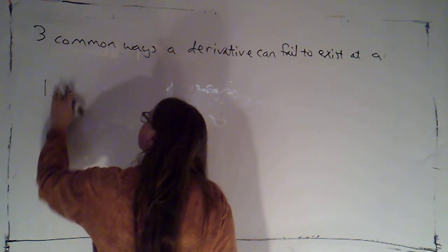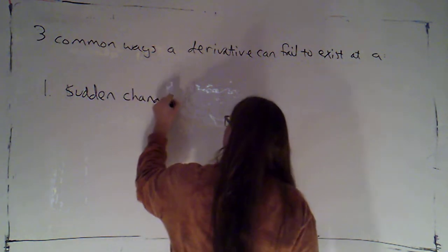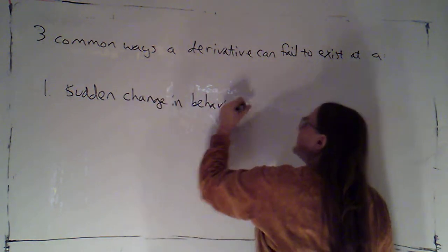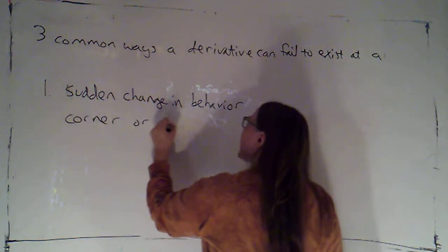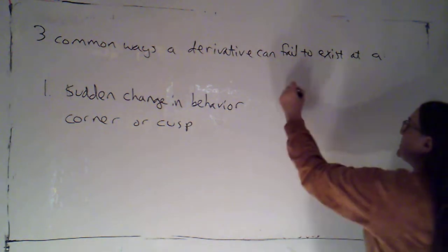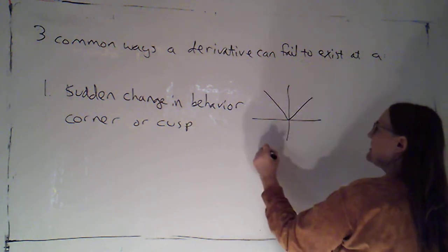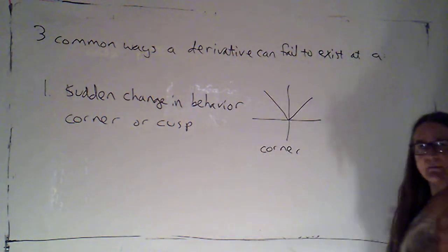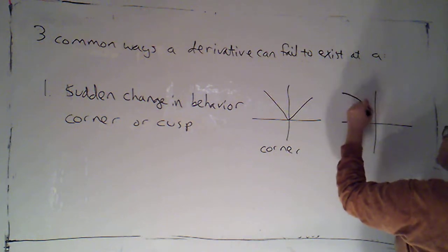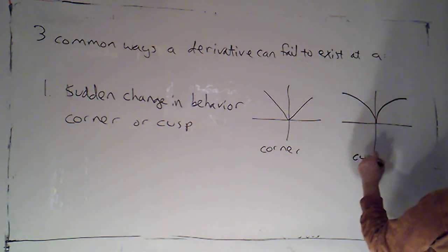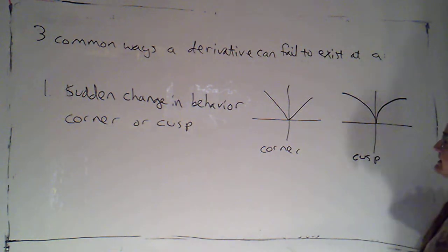One is if there's a sudden change in the behavior of the function. And that's going to generally mean that there's a corner or a cusp in the graph. If I have something like the absolute value function, there's a corner. There's where two line segments meet. If I have two curves that meet at a sharp point, we call that a cusp. With either of these, the derivative doesn't exist.